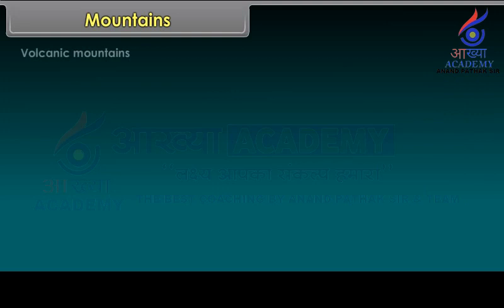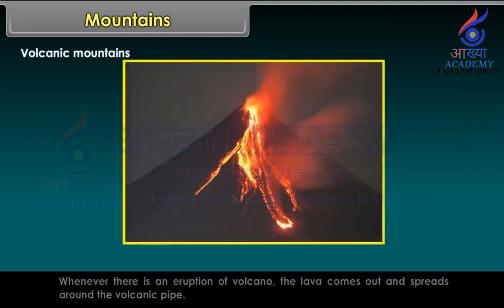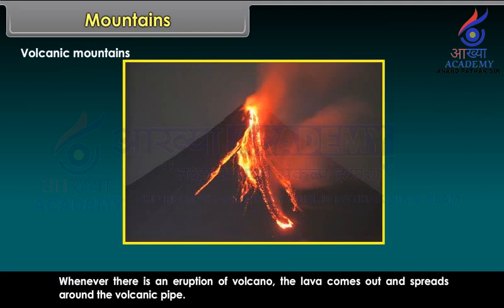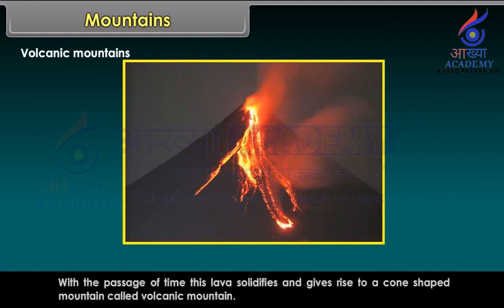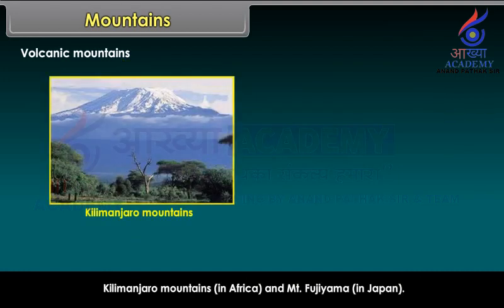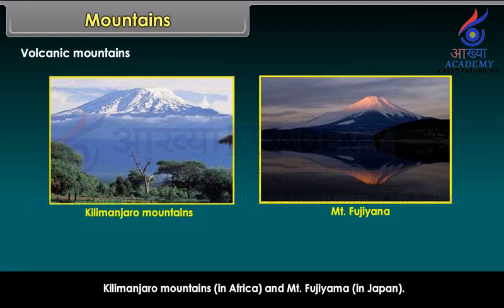Volcanic Mountains. Whenever there is an eruption of a volcano, the lava comes out and spreads around the volcanic pipe. With the passage of time, this lava solidifies and gives rise to a cone-shaped mountain called a Volcanic Mountain. Examples include Kilimanjaro Mountains in Africa and Mount Fujiyama in Japan.